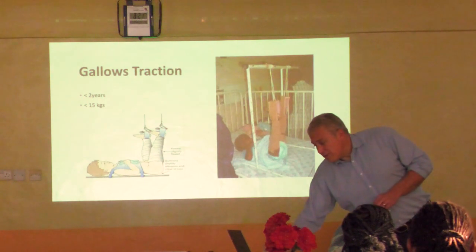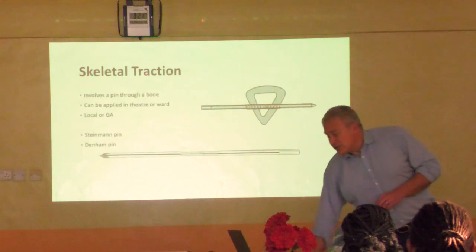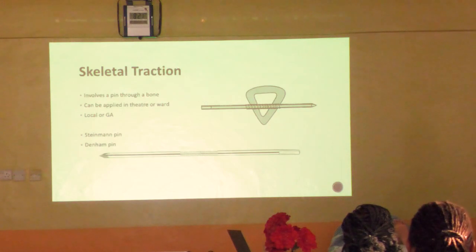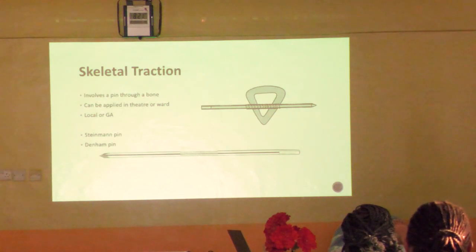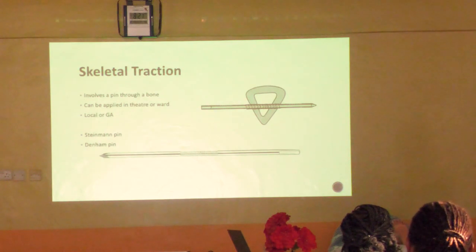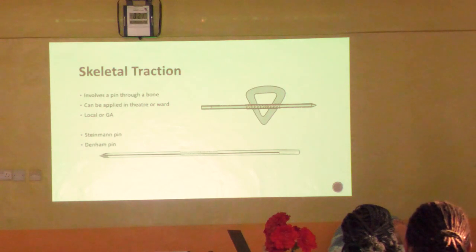Skin traction as definitive treatment is very rare in adults. What typically happens is we think we're about to do an operation, and the patient ends up on skin traction longer than planned due to cancellations - but with regular changes it should be fine. If the patient is not going to be treated definitively with traction, we convert to skeletal traction.